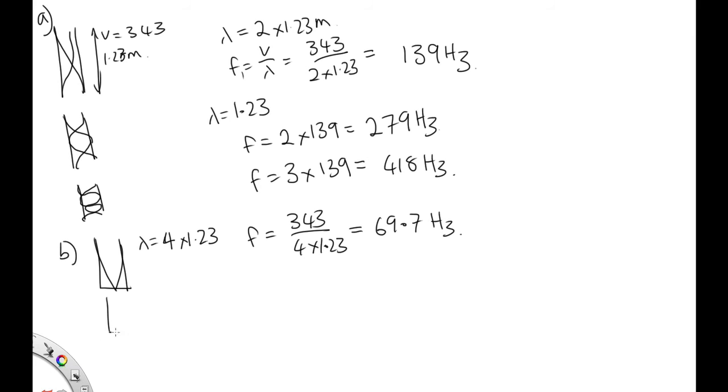Now, the next frequency will occur when we've got 3 quarters of a wavelength in there. So we'll end up with 3 times this. So f will be equal to 3 times 69.7, which will give us 209 hertz.